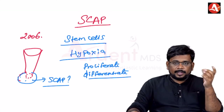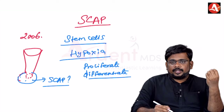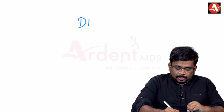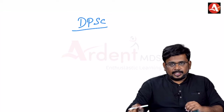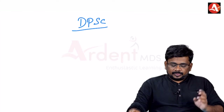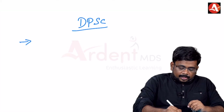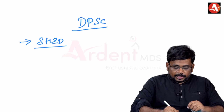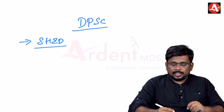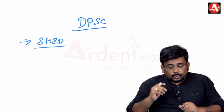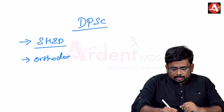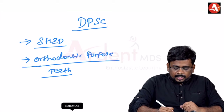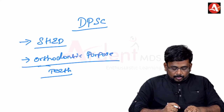Inflamed periapical progenitor cells are found in the periapical region of non-vital teeth. Dental pulp stem cells are easily harvested — they can be derived either from SHED (stem cells from human exfoliated deciduous teeth) once deciduous teeth are extracted, or from teeth removed for orthodontic purposes.